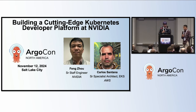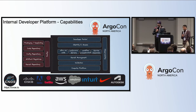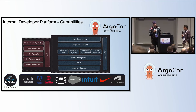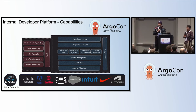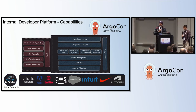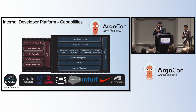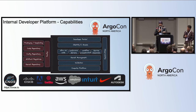This morning we heard the story about internal developer platforms, or building internal developer platforms. I want to introduce you to a project called Canoe — like the boat — which stands for Cloud Native Operation Excellence. This is a project we started last year with companies like Nike, Adobe, Autodesk, and Intuit, to define the concept of internal developer platforms and best practices.